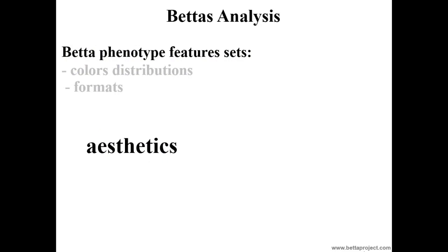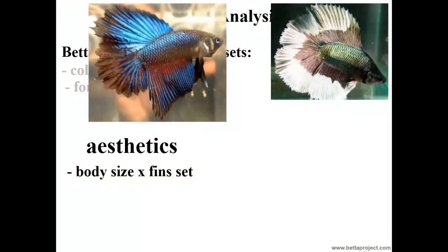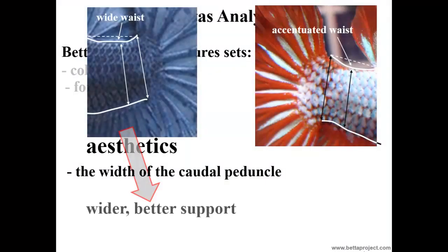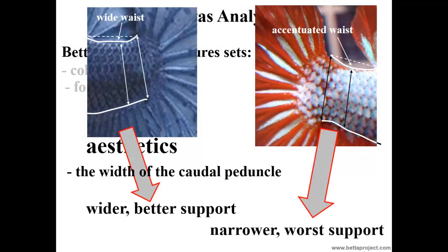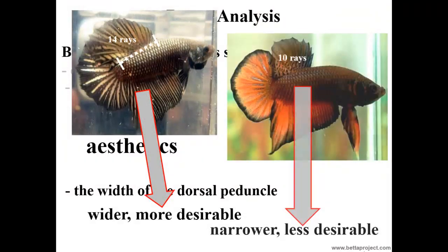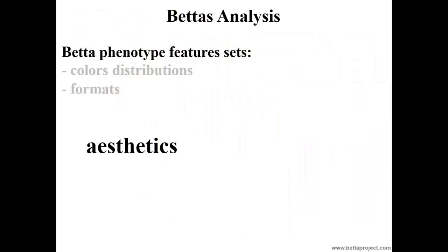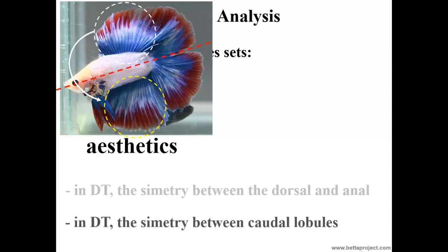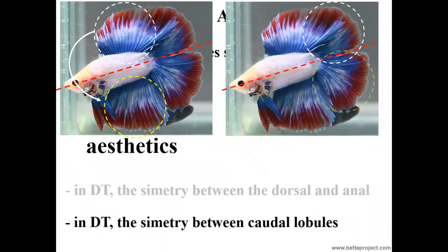As for the details specifically related to aesthetic balance, we may observe: the relationships between body size and the set of fins, the width of the caudal peduncle, the width of the dorsal peduncle — one must look like the other as if reflecting in a mirror — and the symmetry between the caudal lobules. Again, one must look like the other as if reflecting in a mirror.